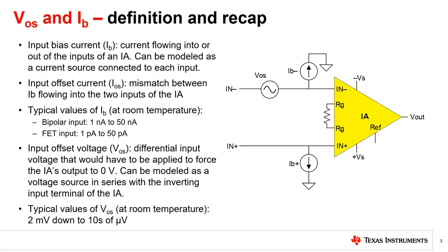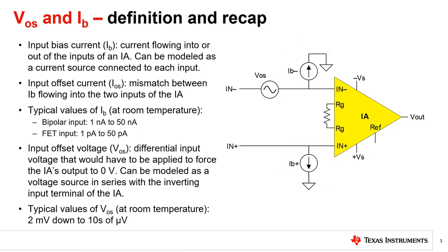Just as described in a previous Op Amp TIPL lecture, the input bias current, or IB, of an IA can be defined as the current flowing into or out of the inputs of the IA, modeled as a current source connected to each input. Input offset current, or IOS, is defined as the mismatch between the input bias currents flowing into the two inputs. Typical values of IB at room temperature range from 1 nanoamp to 50 nanoamps for bipolar input IAs, and 1 picoamp to 50 picoamps for FET input IAs. Offset voltage, or VOS, is the differential input voltage that would have to be applied to force the IA's output to 0 volts, modeled as a voltage source in series with the inverting input terminal. Typical offset voltages range from 2 millivolts down to tens of microvolts depending on the IA.